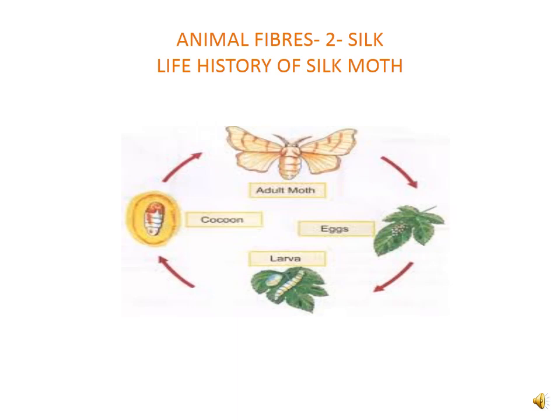There is a variety of silk moths which look very different from one another, and the silk yarn they yield is different in texture — that means cold, smooth, shiny, etc. Thus, Tasar silk, Muga silk, Kosa silk, etc. are obtained from cocoons spun by different types of moths.